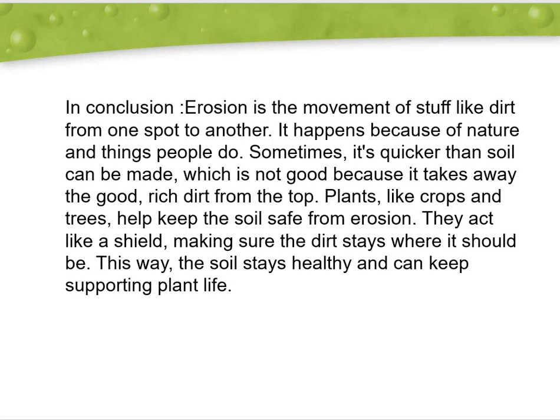In conclusion, erosion is the movement of material like dirt from one spot to another. It happens because of natural forces and things people do. Sometimes it is quicker than soil can be made, which is not good because it takes away the good, rich dirt from the top. Plants like crops and trees help keep the soil safe from erosion.